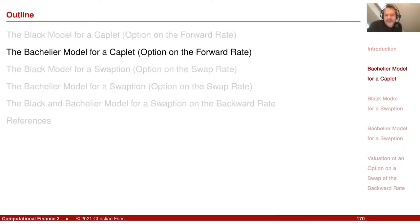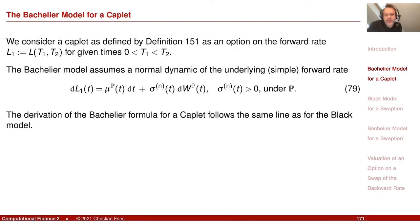To see that the principles we use work also for other models, let's repeat another important model: the Bachelier model. In the Bachelier model, we now assume that the interest rate L1 follows a normal dynamic. So now I have not a log-normal process, I have a normal dynamic — there is just a sigma dW here.